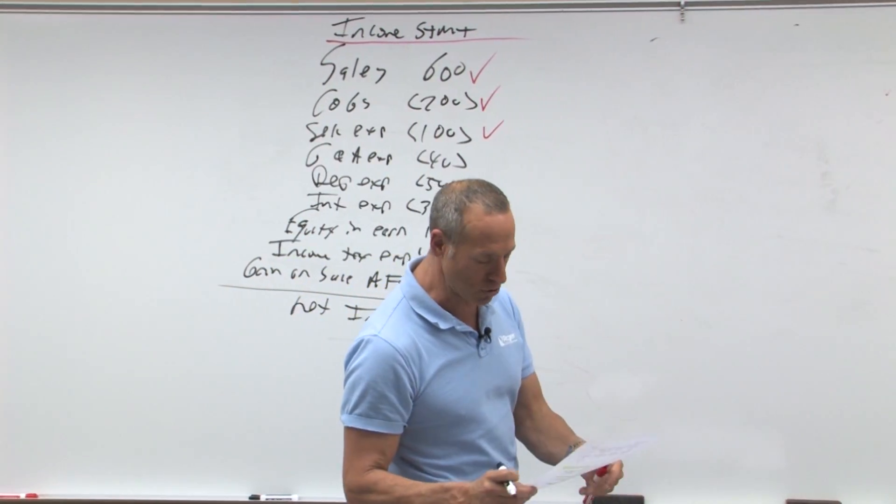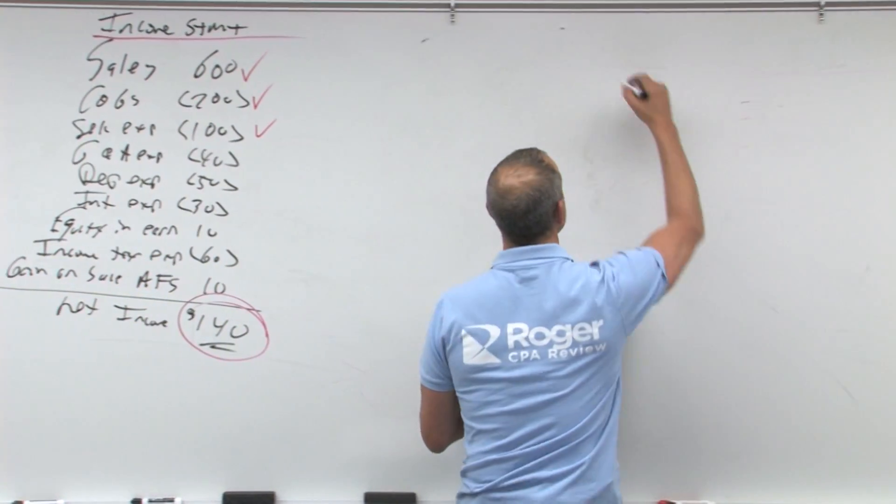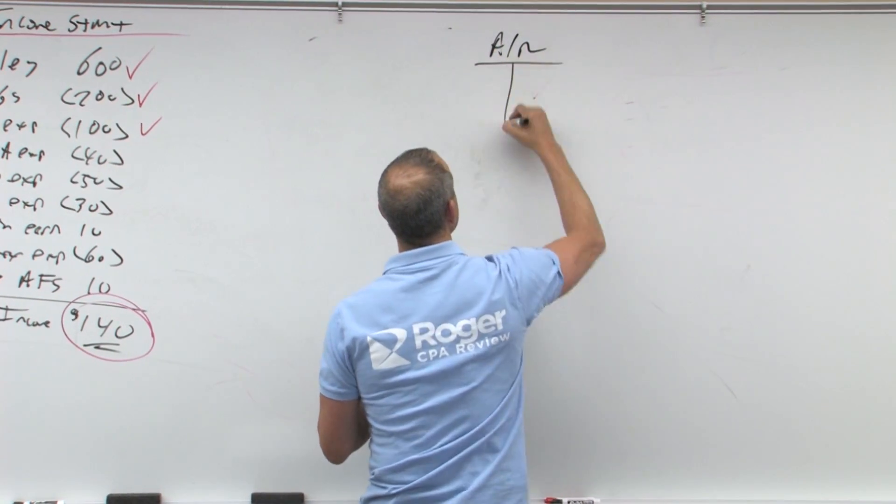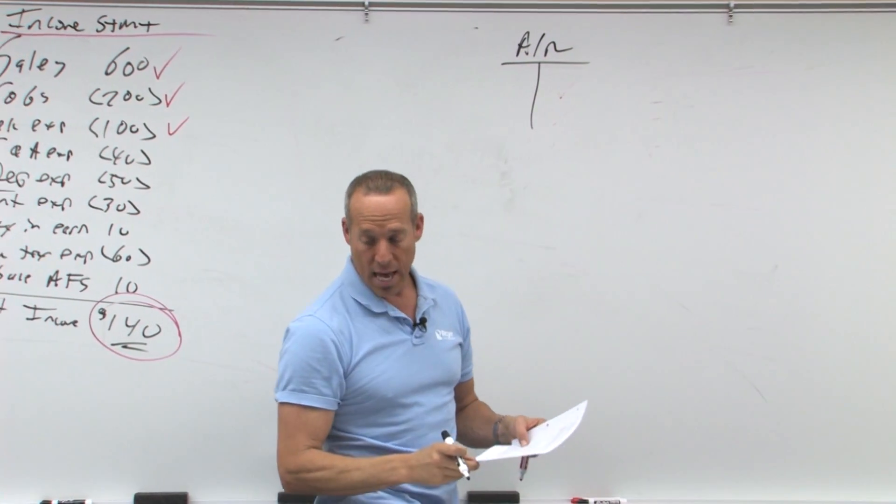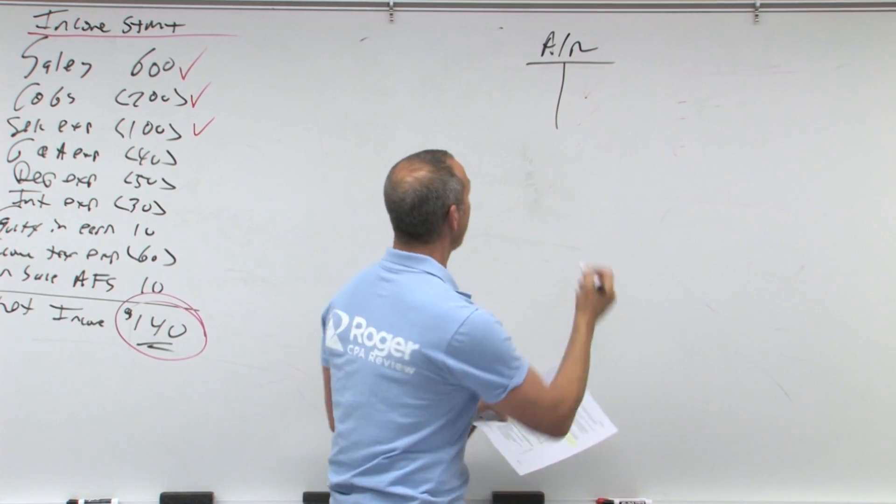It mentions here selected balance sheet account changes, and you'll see here, for example, accounts receivable. Now it's important to know it says increase or decrease. If it's an asset, it goes up, then that would be a debit.